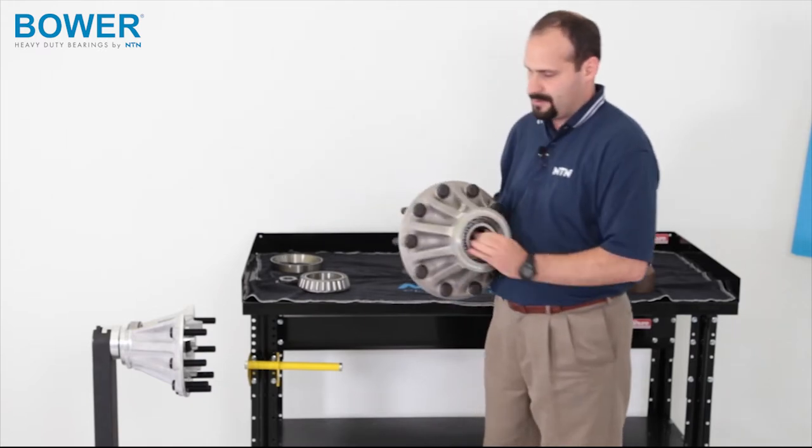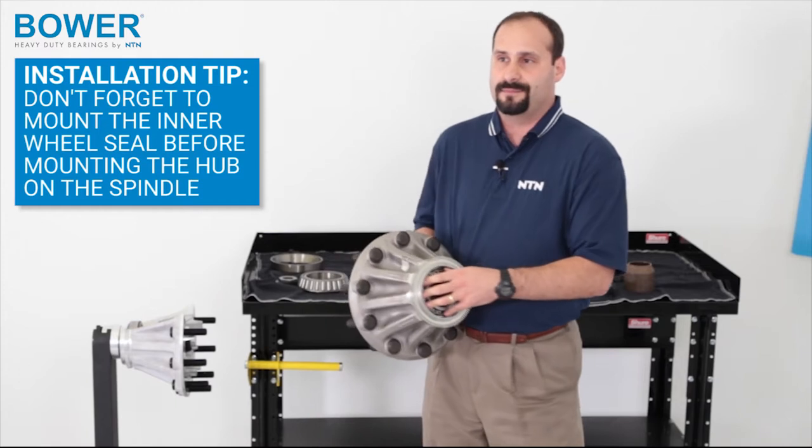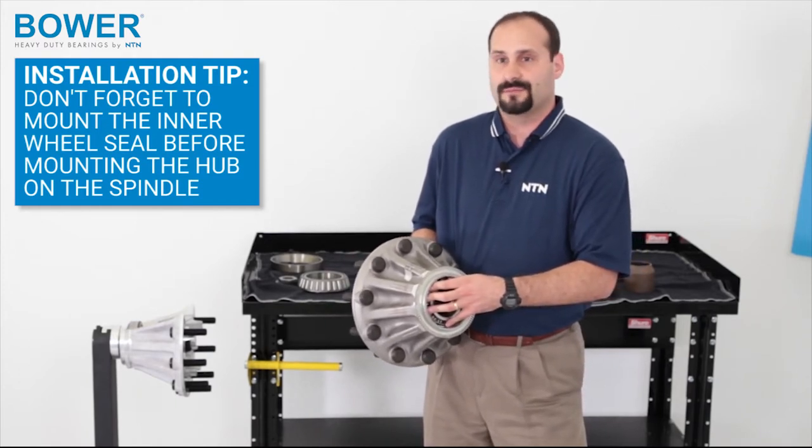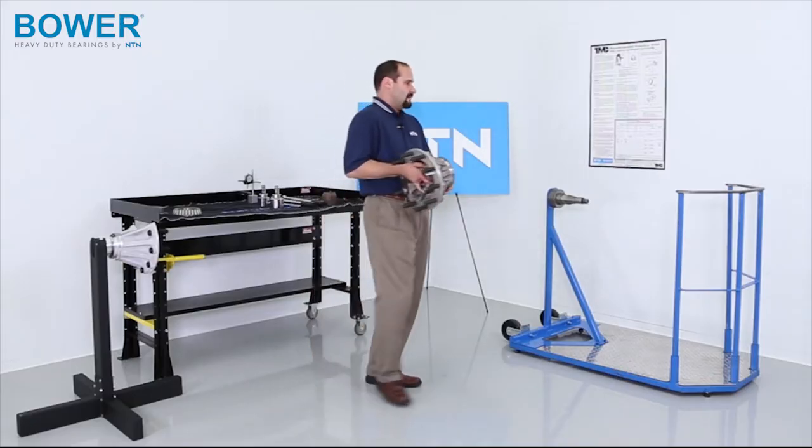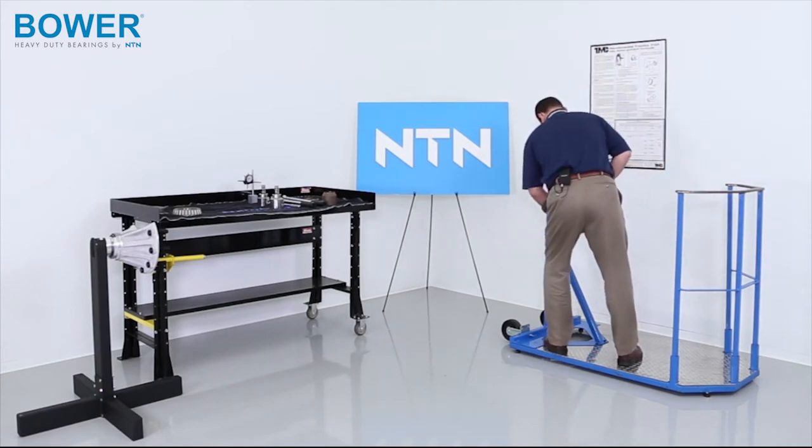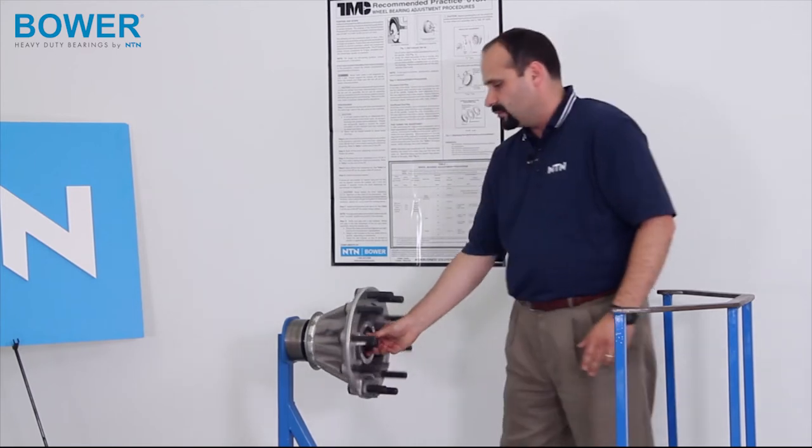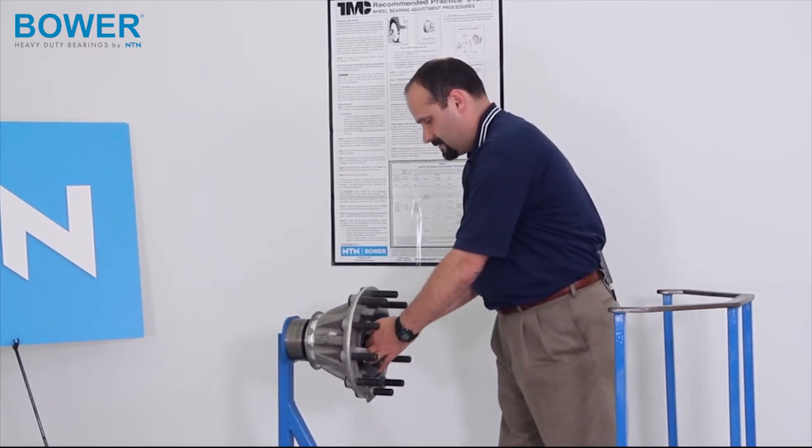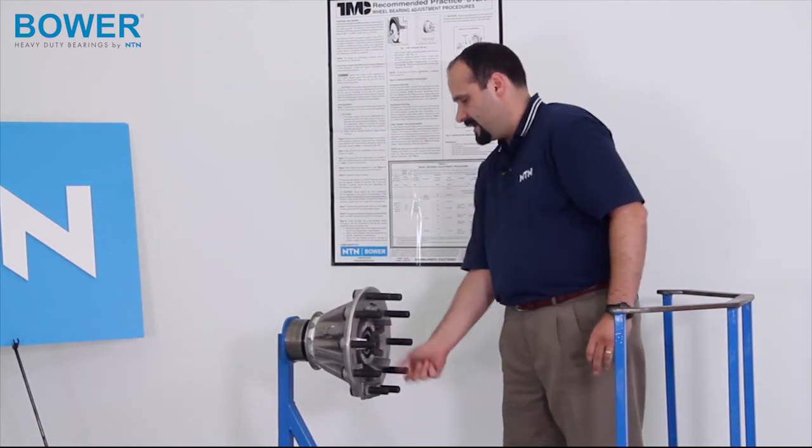So we've got both bearings in the hub. Now would be a good time to put the seal onto the hub before you put the hub on the truck and have to forget the seal and then take everything off to put the seal back on. Make sure you have your inner seal on and then we go on over and put it onto the spindle of the truck. So we'll put it on, take our adjusting nut and get it on there.